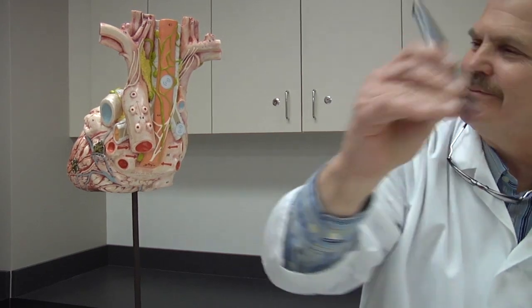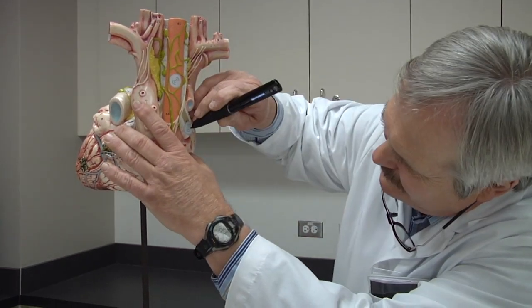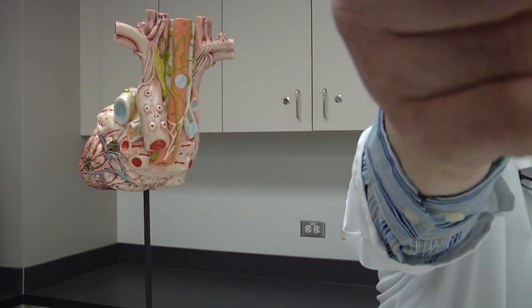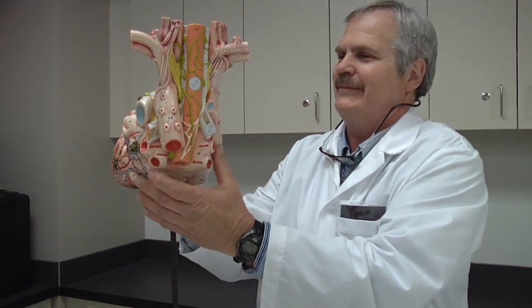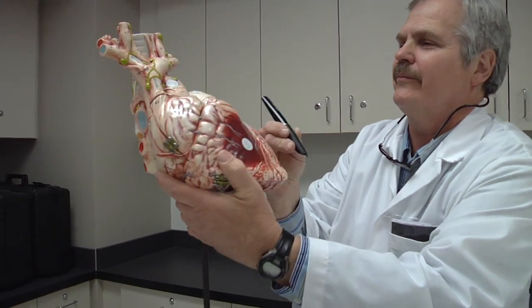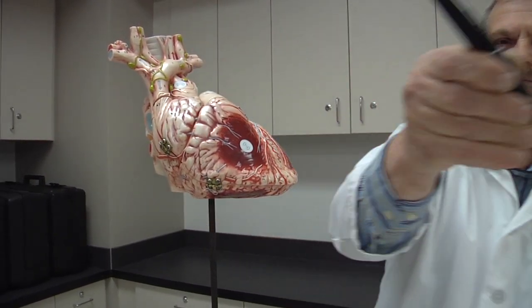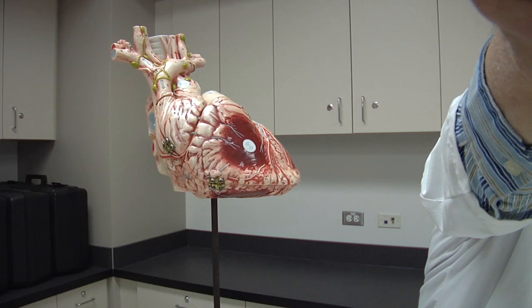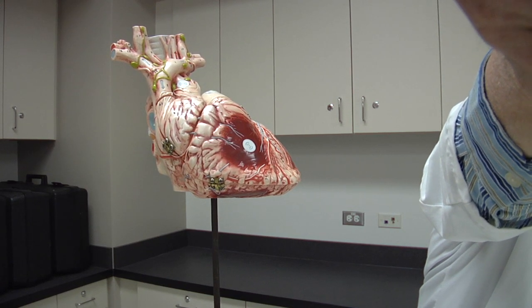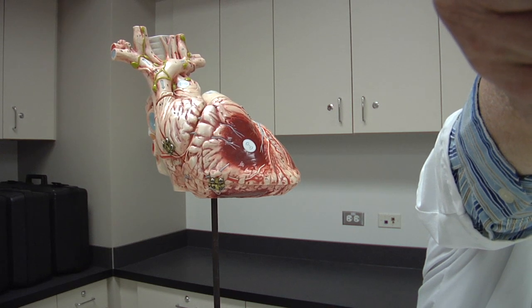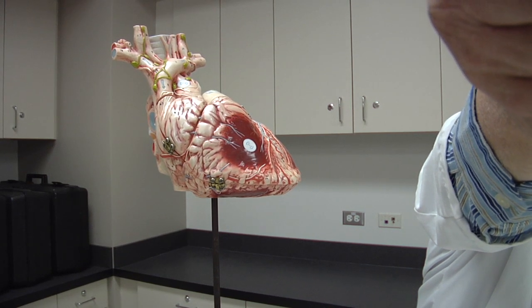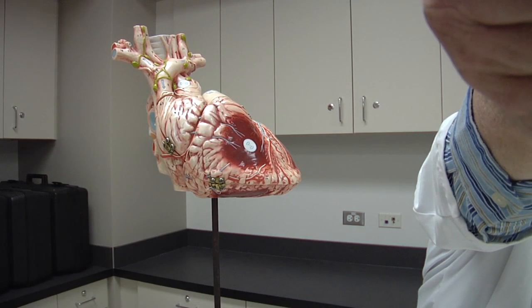Esophagus. Trachea. This is the pulmonary artery. It's the only artery in the human body to carry deoxygenated blood. It carries this deoxygenated blood to the lungs to pick up oxygen.